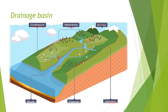Here is a tributary — this is a stream or smaller river, as you can see it flowing into the main river. That's what a tributary is. Channel is the bed of a stream, river, or other waterway. As you can see, it flows into the river — so channel simply means the bed of a stream, river, or other waterway.